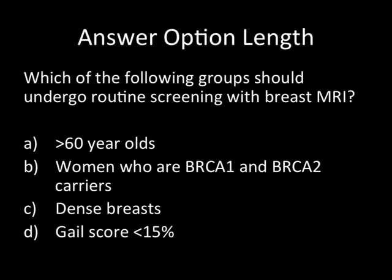Try to keep all answer options the same length. We tend to write a much longer answer for the correct option because we spend more time thinking about it, then toss in shorter distractors. This constitutes cluing — signaling to test-takers which is the correct answer. Conversely, you can also mislead good test-takers if the longer option happens to be wrong. You can usually rewrite options to be approximately equal in length; if you can't, try to have two longer and two shorter, or three longer and two shorter.